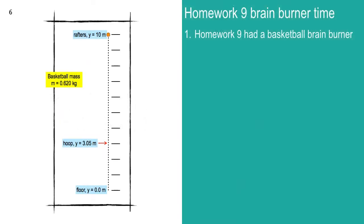Let's go to homework nine — brain burner time. We had a basketball brain burner. The image shows you're in a gym where the elevation of the rafters is 10 meters — not a very big gym, but you could play hoops there. The hoop itself is down at about 3.05 meters. You didn't have any calculations with 3.05 on homework nine — I'm not saying nothing about homework 10. You had different elevations to work with, and I laid out a table for you.